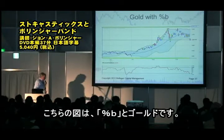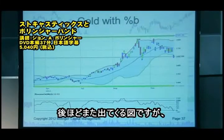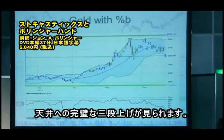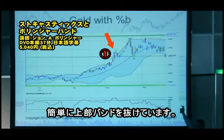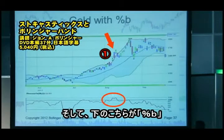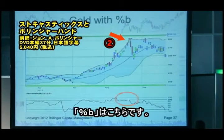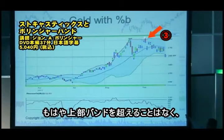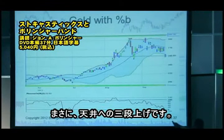Here's a picture of percent B in gold. This to me is one of the most beautiful Bollinger Band charts ever — a perfect three pushes to a high. On the first push, price easily gets outside of the upper band, and here is the reading from percent B. On the second push, it can barely get outside of the upper band, and here is the reading on percent B. On the third push, it can't get outside the upper band at all, and here is the reading on percent B. Three pushes to a high.